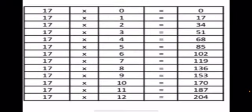17 zeros are 0. 17 ones are 17. 17 twos are 34. 17 threes are 51. 17 fours are 68. 17 fives are 85. 17 sixes are 102.